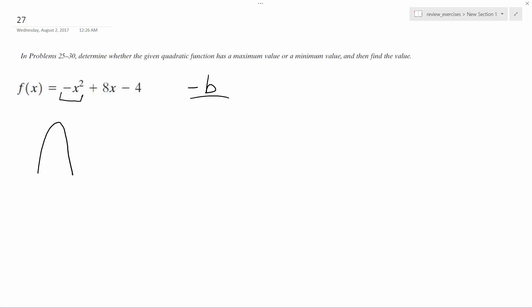So we use negative b over 2a, which is going to be negative b, which is 8, over 2 times negative 1. And that's what a is. So we get negative 8 over negative 2, which is equal to 4.